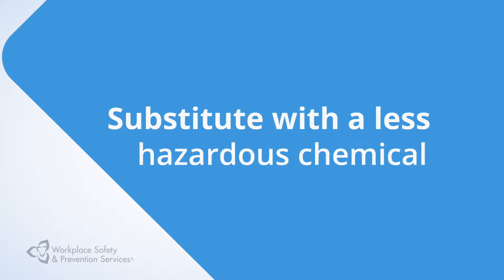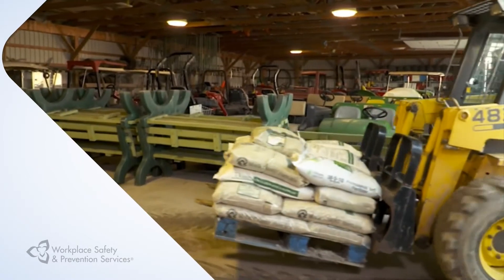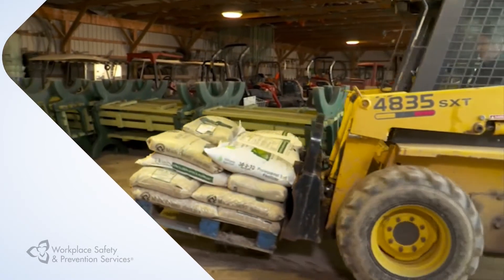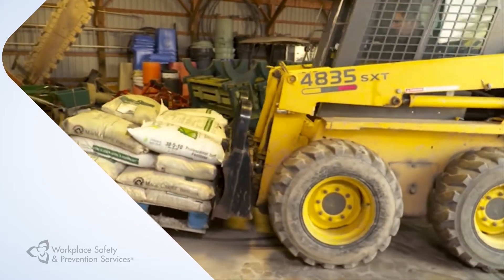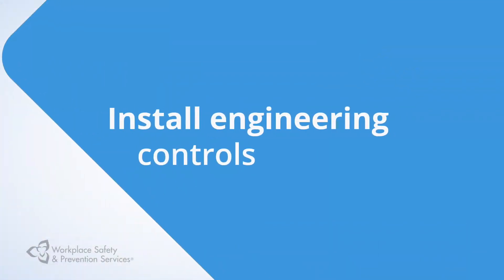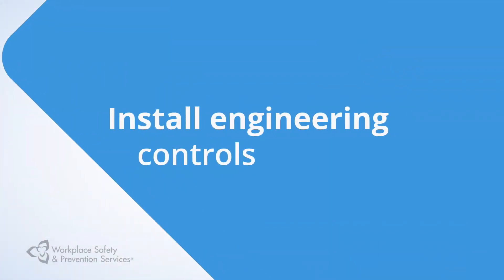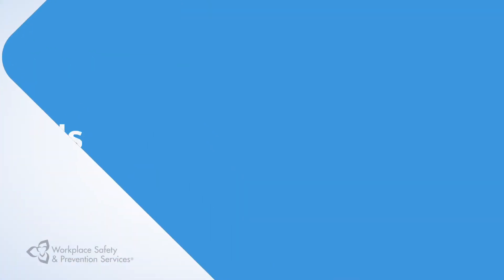For example, a chemical that comes in a pellet form gives off less inhalable dust than a powdered form. Install engineering controls such as ventilation and dust capture systems to remove the contaminant and prevent exposure.